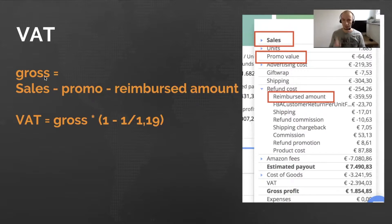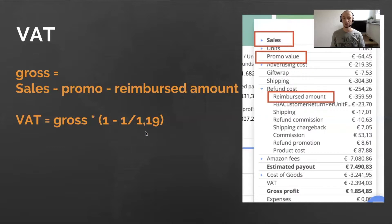The formula is approximately: sales minus promo minus reimbursed amount — this is the gross sum — multiplied by a factor. This is exactly the formula for calculating VAT from the gross price. This factor is 1.19 because in our example we assume a VAT rate of 19%. If you need to use a different rate like 20%, then you need to adjust this factor accordingly.